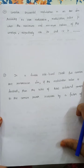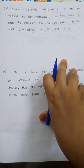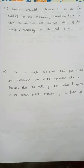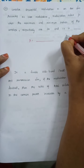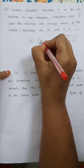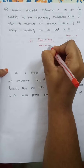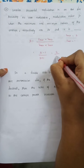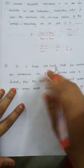Next question: Consider sinusoidal modulation in an AM system assuming no over-modulation. Find the modulation index mu when the minimum and maximum values of the envelope are 3 V and 1 V respectively. Using the formula mu = (Vmax - Vmin)/(Vmax + Vmin) = (3 - 1)/(3 + 1) = 2/4 = 1/2. So mu = 1/2. It's a simple question.